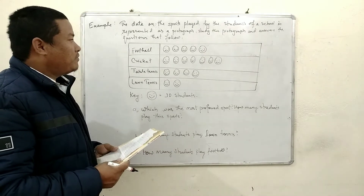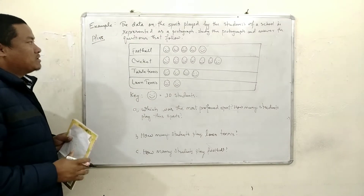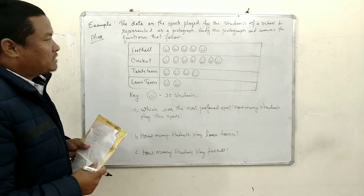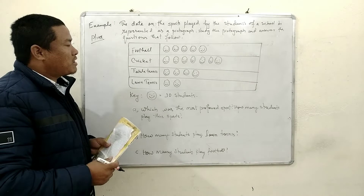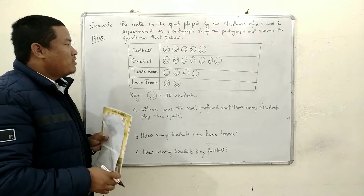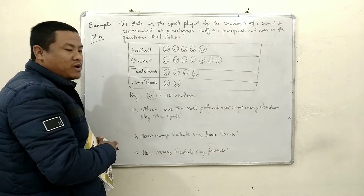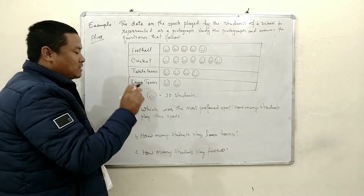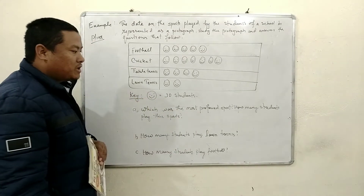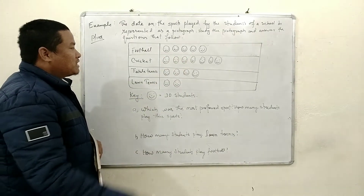Now children, come to page number 158. Here is an example question for pictograph: the data on the sport played by students of a school is represented as a pictograph. Study the pictograph and answer the questions that follow. The most important thing to note first is the key — one picture is equal to 10 students.